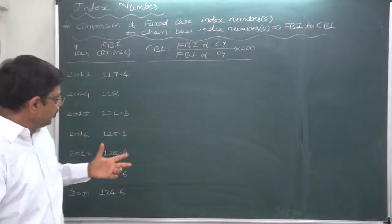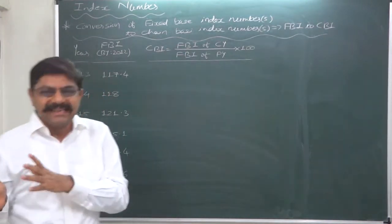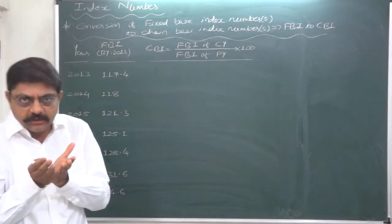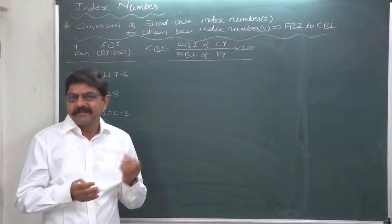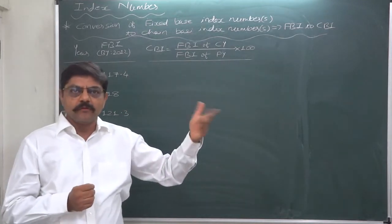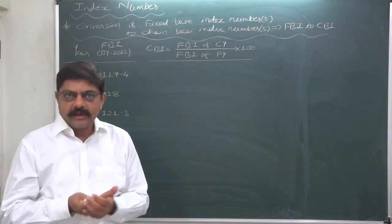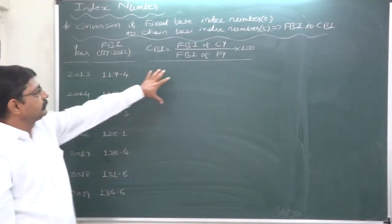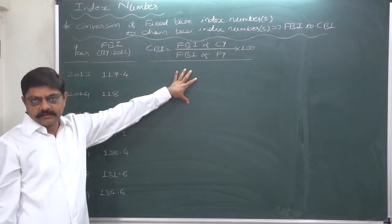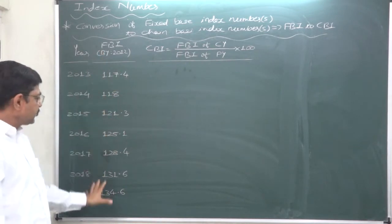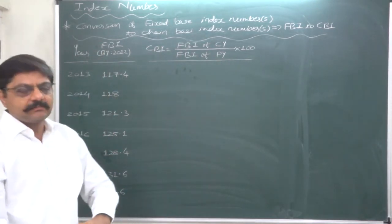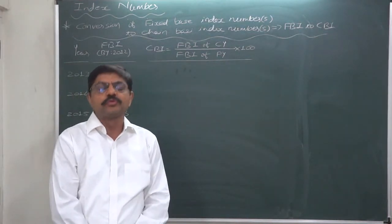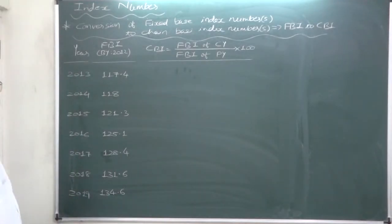This is easier because in the previous formula, the index number we had already calculated needed to be substituted. If a student calculated the fixed base index number for the previous year wrongly, all other answers would be wrong. But in this case, we only substitute the index numbers given in the problem — so it is less risky.